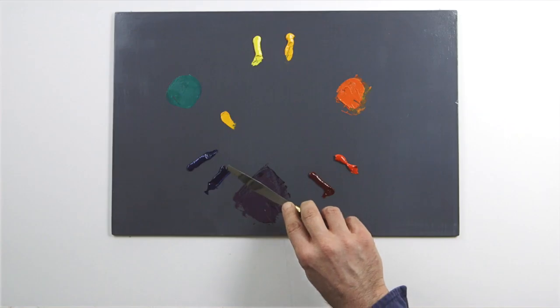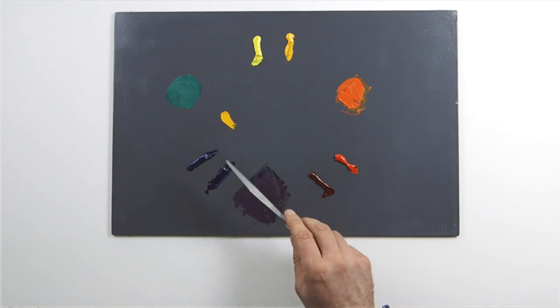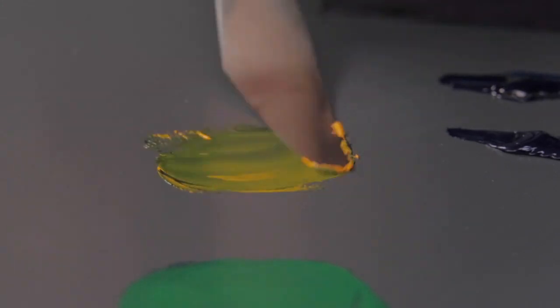Now let's mix a green from ultramarine and cadmium yellow. When complementaries are combined, the mixtures tend to grey down.